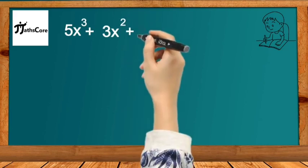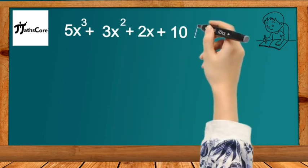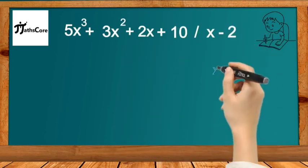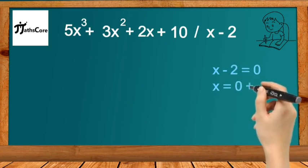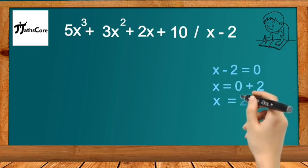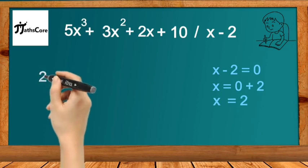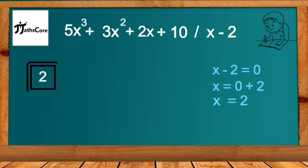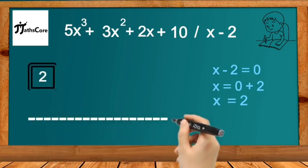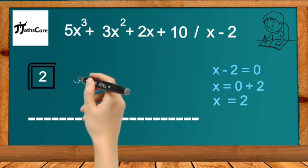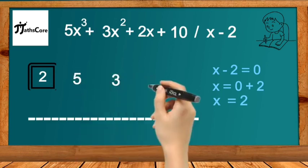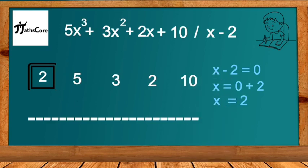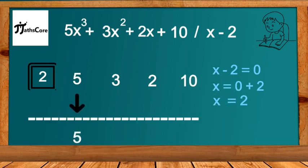Equate x - 2 with 0: x - 2 = 0, so x = 2. Take this value of x as the divisor. Let's arrange all the coefficients of the given polynomial: 5, 3, 2, 10. Take the first coefficient 5 as it is at the bottom and multiply it with 2: 5 × 2 = 10.